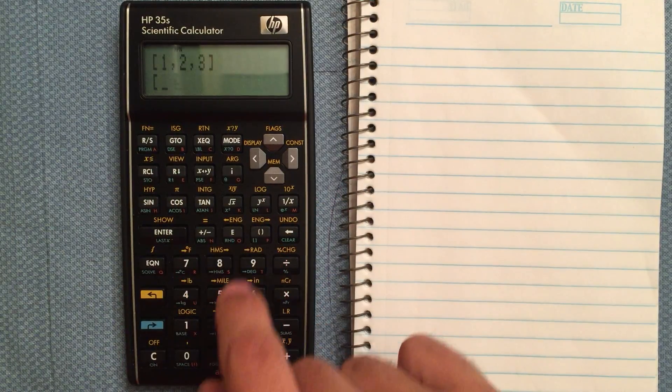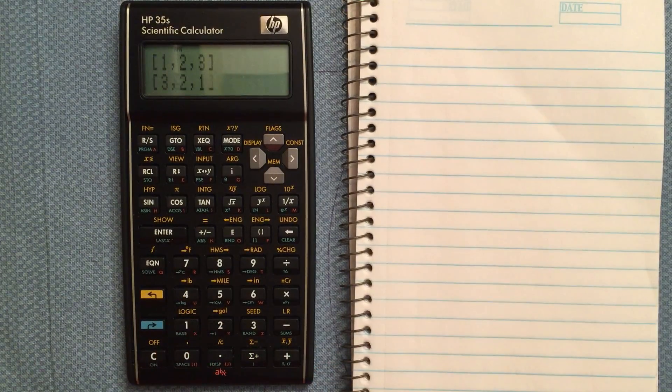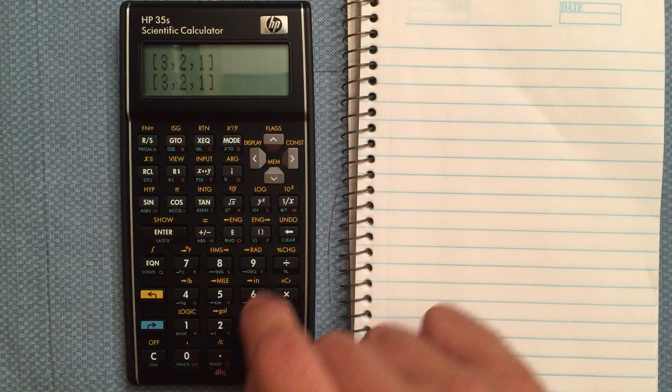I want to put in another vector of three comma two comma one, and that gives me my two vectors.